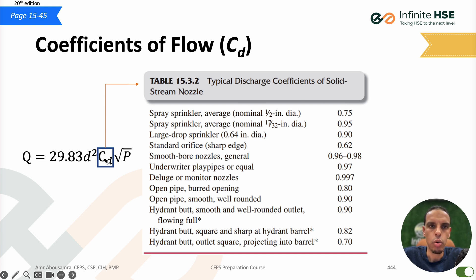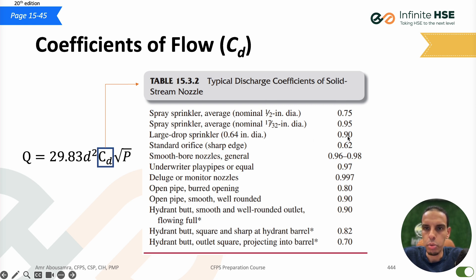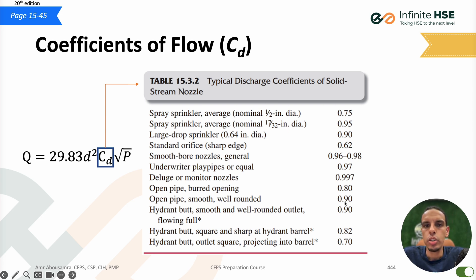The coefficient of flow, cd, is based on the material of the nozzle. For a normal spray sprinkler with a half-inch diameter, it is 0.75. The large drop sprinkler is 0.9. The deluge or monitor nozzle is 0.997. The open pipe with a smooth, well-rounded end is 0.9. This table of coefficient of flow values is important and you may be asked about it in the exam.